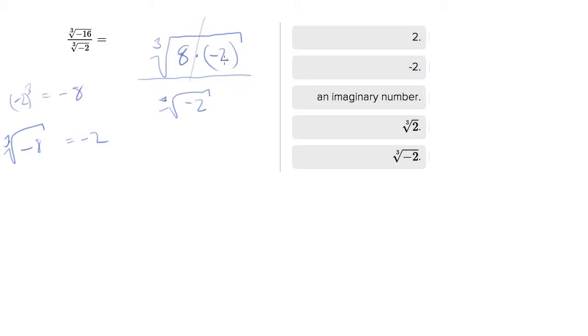Now one thing you want to notice is that, just like with square roots, with cube roots you can split them across anything that's multiplied inside. So this is equivalent to cube root of 8 times cube root of negative 2, all over cube root of negative 2.